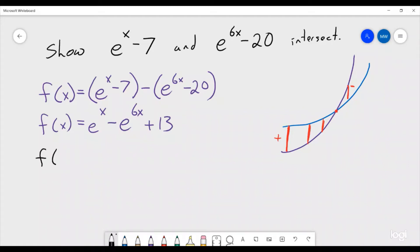So let's plug in some different values and see what we would get. For example, f(0), that is going to be 1 minus 1 plus 13 equals 13. So at 0, it's positive.